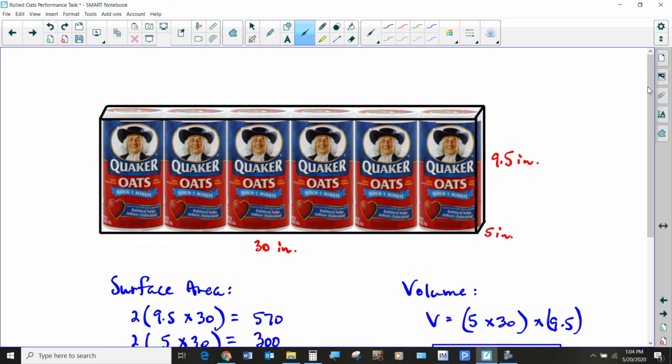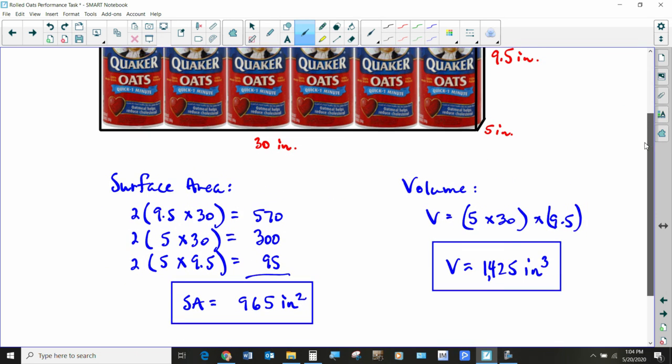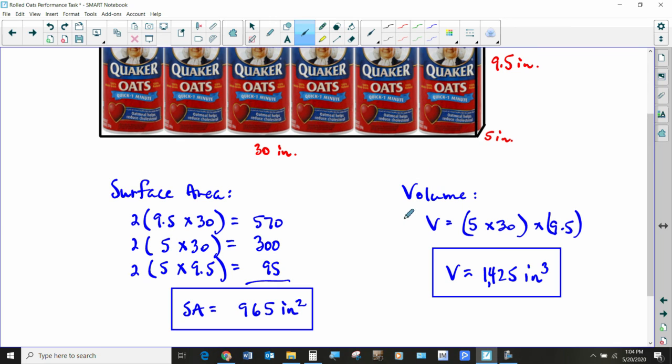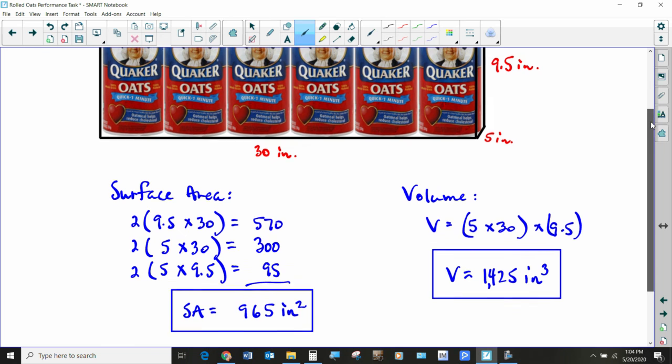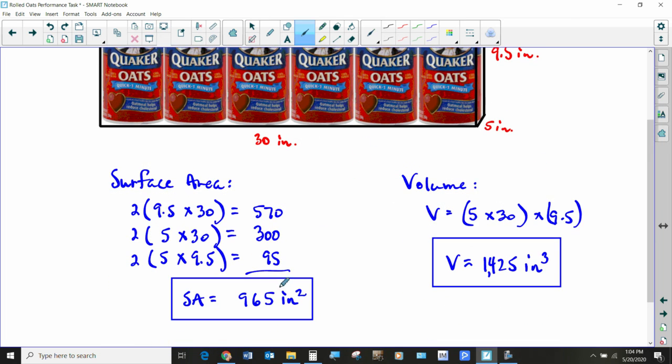Hopefully you are feeling good about how to find surface area and volume of rectangular prisms. This is something we've been doing pretty much since sixth grade, so you shouldn't have had too much trouble with that. But the bigger idea is that relationship where when you change the dimensions, you change the surface area, but not necessarily the volume for these boxes. All right, good job on that. Tomorrow we are going to do a study guide, and then on Friday is the chapter test. All right, take care.